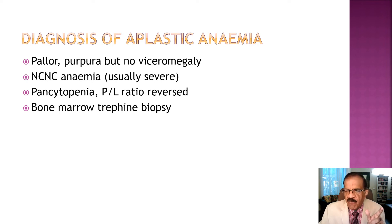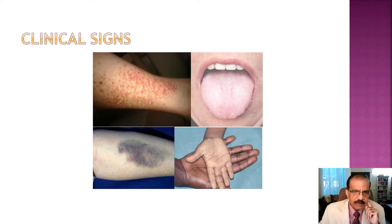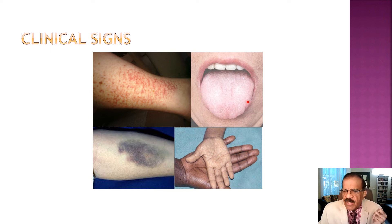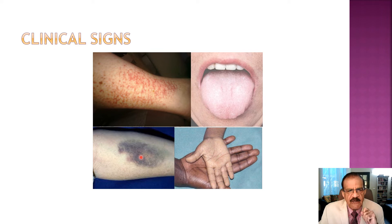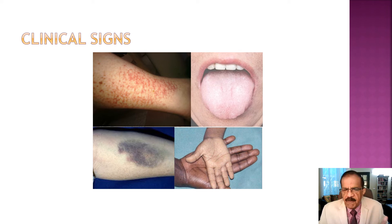Clinical signs include pallor as the fundamental sign of all anemias - pale tongue, pale skin, and pale palms compared to normal. The patient may also present with petechiae - small punctate hemorrhages - indicating thrombocytopenia. Large bruises can also indicate thrombocytopenia, which is part of the aplastic anemia picture.